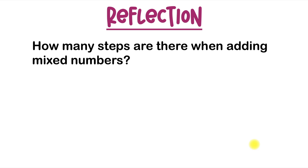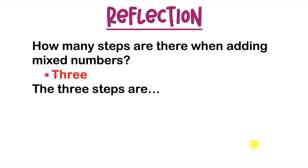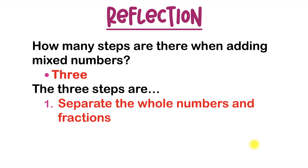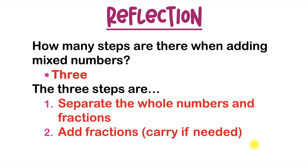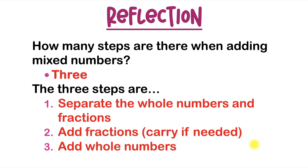So what did we learn today? How many steps are there when adding mixed numbers? There are 3 steps. Step number 1: separate the whole numbers and the fractions. Step number 2: add the fractions and carry if needed. Remember, you're only going to have to carry if you end up with an improper fraction — you'll convert it to a mixed number and carry the whole number. And step number 3: add the whole numbers. That's everything you need to know about how to add mixed numbers.